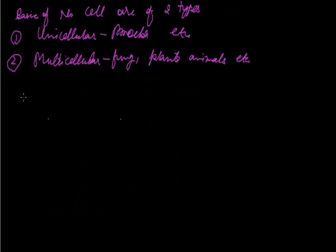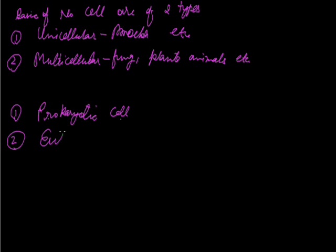Now on the basis of their modification or advancement, again cells are of two types. First one is prokaryotic cell while the second one is eukaryotic cell. Prokaryotic cells are primitive cells and incomplete cells. They do not have basic structures of true cells.